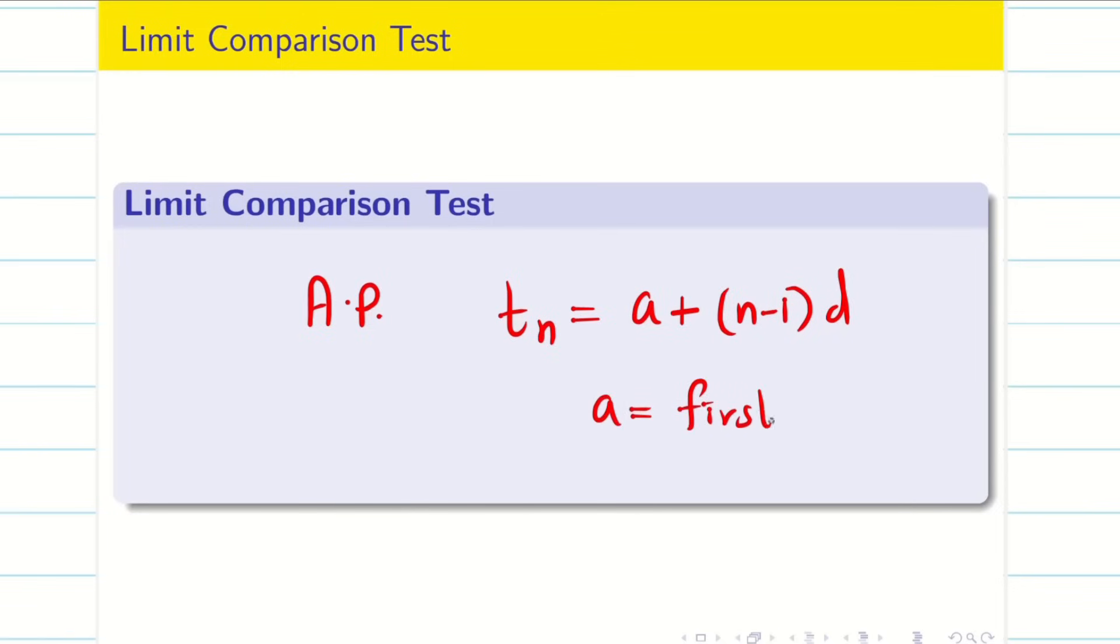What is A? A is the first term and D is the difference between any consecutive terms. Let us see how to find the nth term. Suppose I am taking the same sequence: 1, 3, 5, etc. up to infinity. Now, here A is 1.